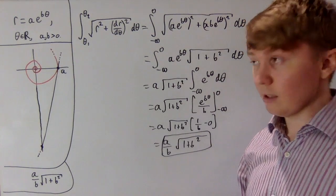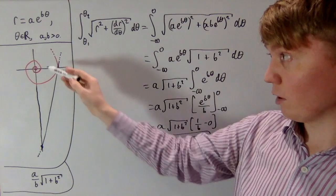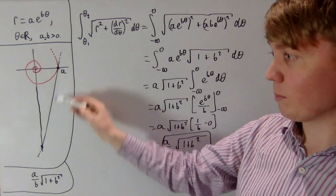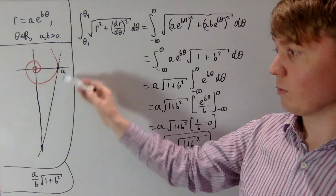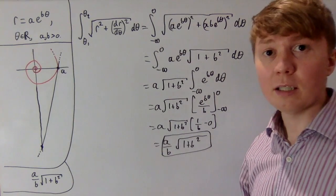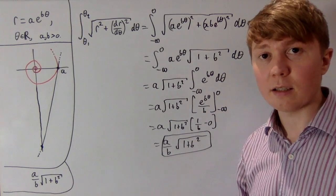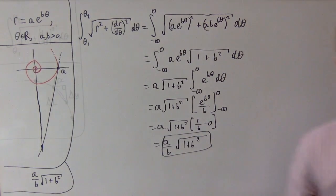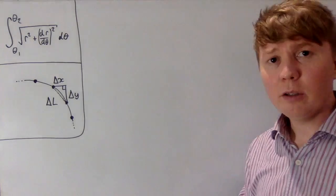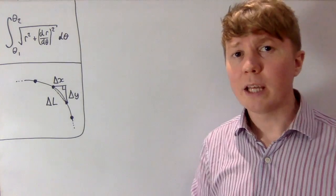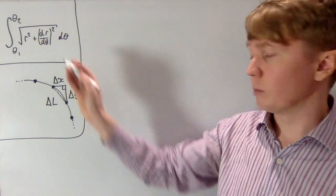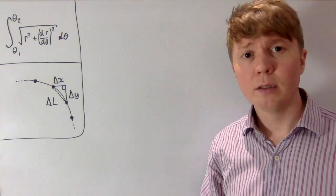The length of the spiral is indeed the same as the length of the tangent down to the y-axis. We'll now finish with an informal look at where this arc length formula comes from.